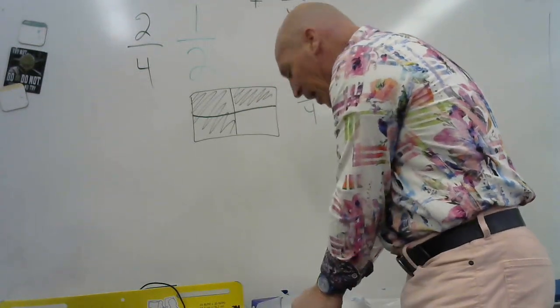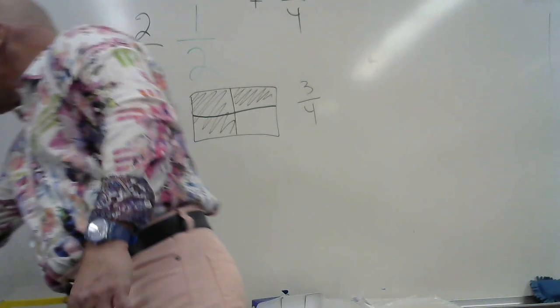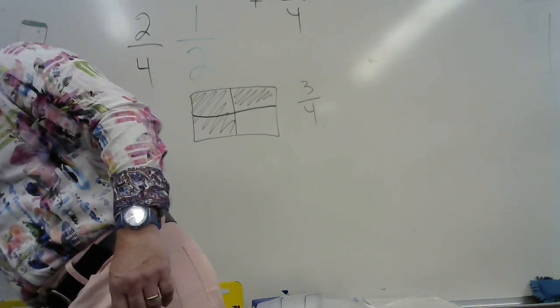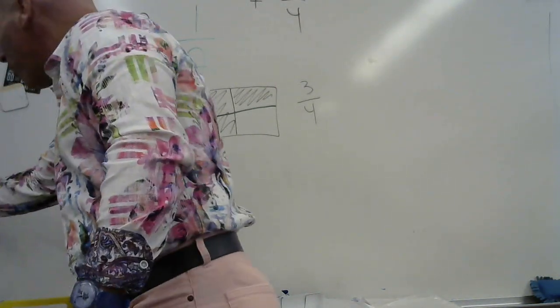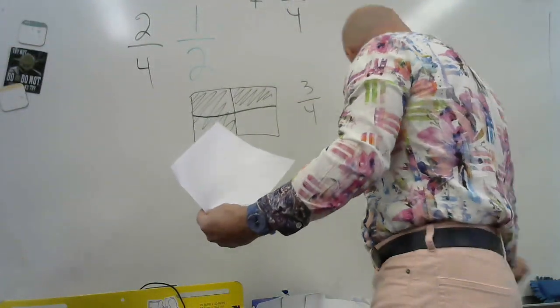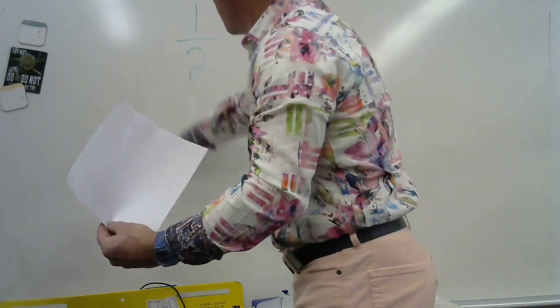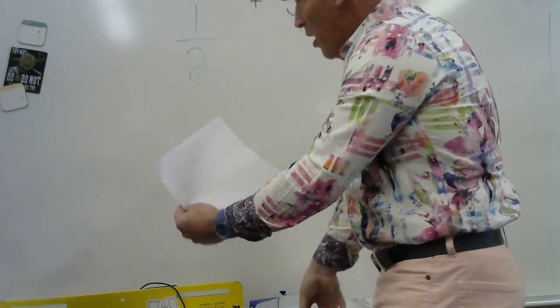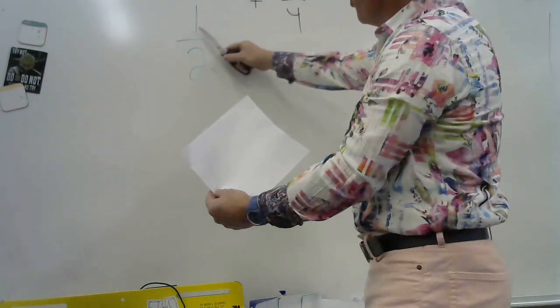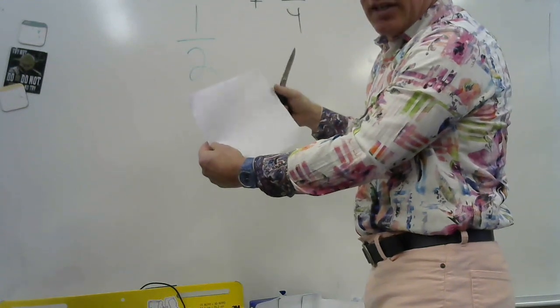Now, what Miles did, which was a very great way of doing it, is he took a piece of paper. He took a piece of paper, and he wanted to show you physically, instead of through a pictograph, he wanted to show you how if you have a whole, and both of these represent a whole. A fraction represents a whole.